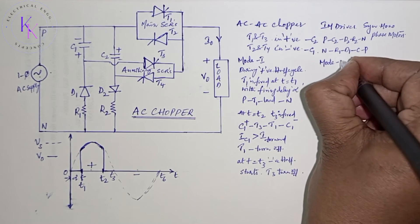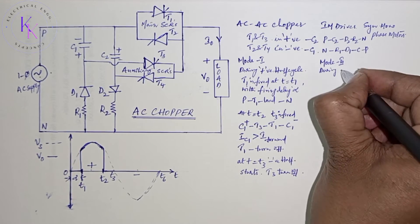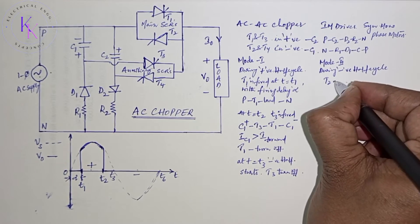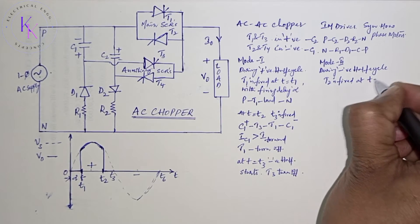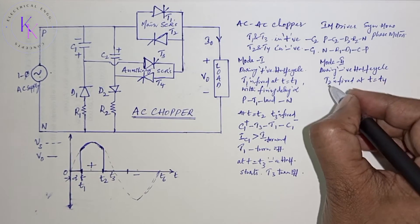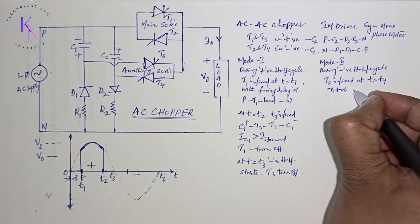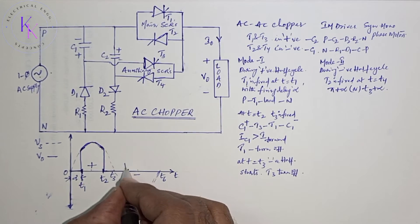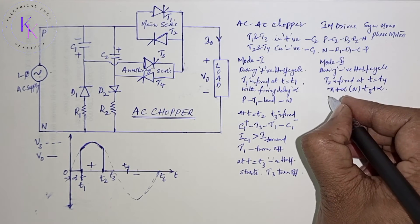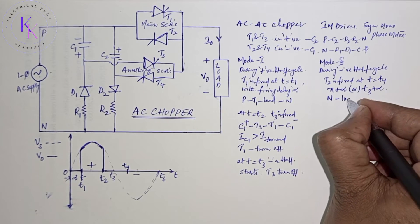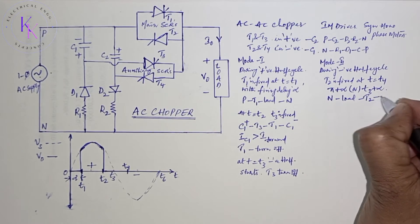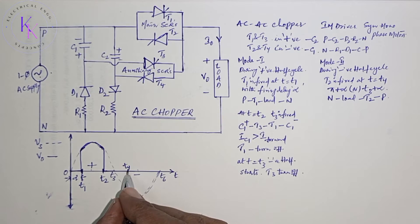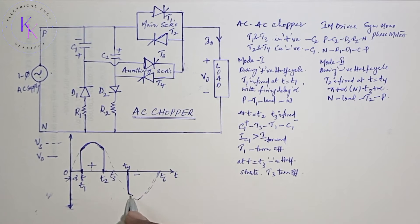Now mode 2: during negative half cycle, T2 is fired at T equals to T4. The firing signal is pi plus alpha or T3 plus alpha. This is T4. The current flows from the negative to the load through T2 to phase, and the input voltage appears across the load.